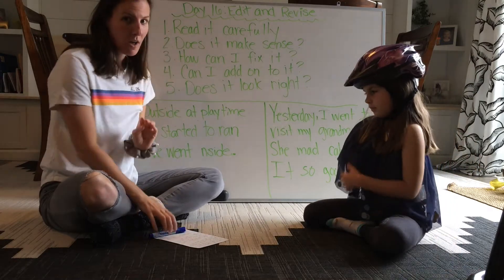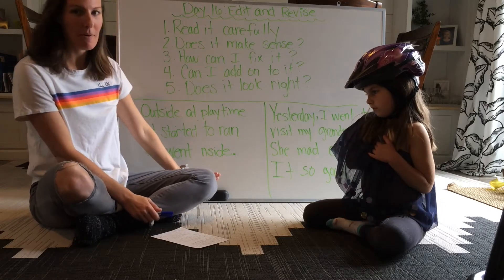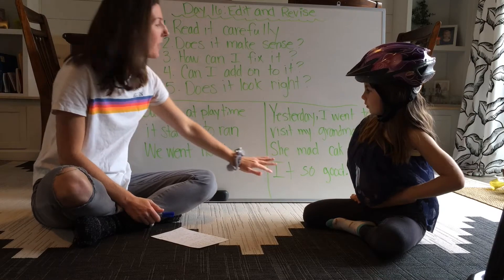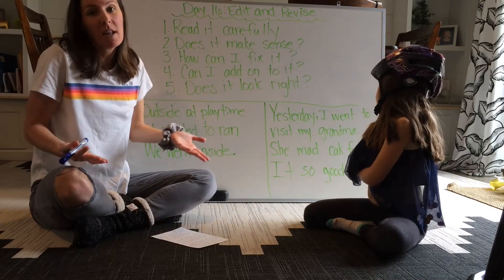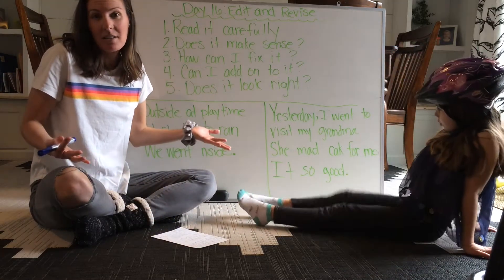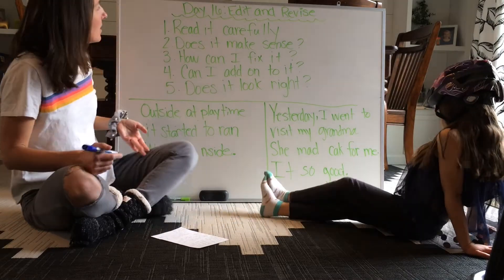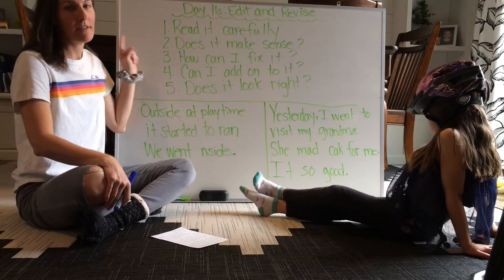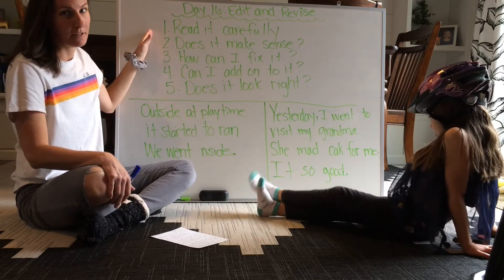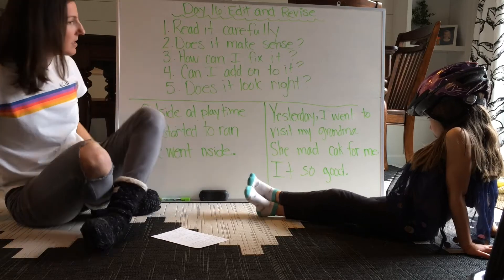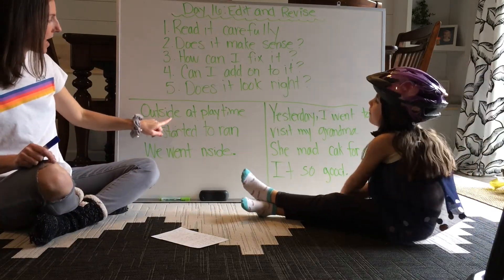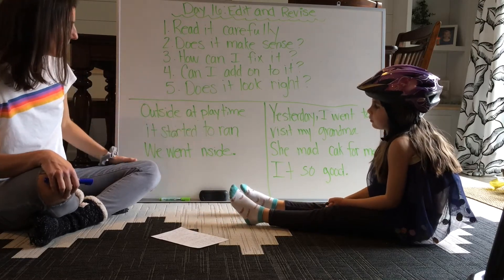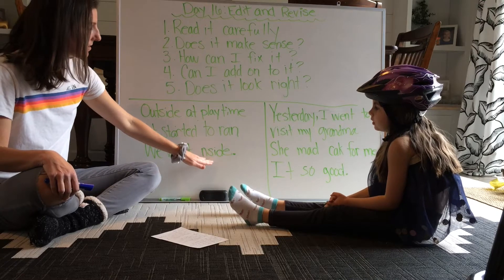I have two stories written here. Look at this one — this one's about playing outside, and this one's about my grandma. Because I was writing quickly before just to get my ideas down, I of course made some mistakes, just like you all have. So our first step to fix it up and fancy it is to read our story carefully. I'm going to read this story carefully — watch. 'Outside at playtime, it started to rain. We went inside.'